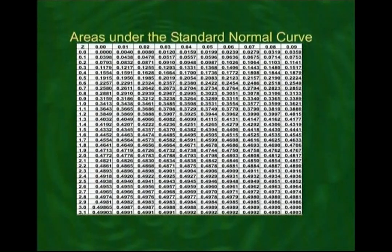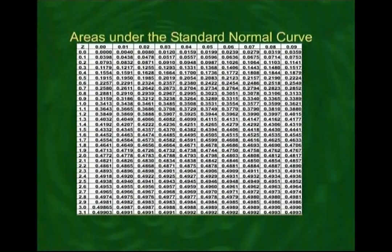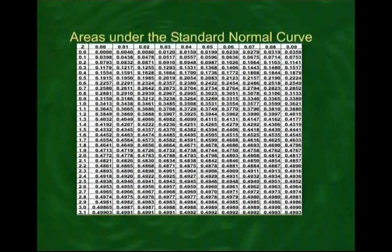We need to find the area under our normal curve from minus infinity up to x = 1. Using standardization: z = (x − 3.5) / 1.0. Substituting x = 1.0 gives z = (1 − 3.5) / 1 = −2.5. So we need the area under the standard normal curve from minus infinity up to z = −2.5. Since the area table only has positive z values, we use symmetry: the area from −∞ to −2.5 equals the area from 2.5 to +∞.